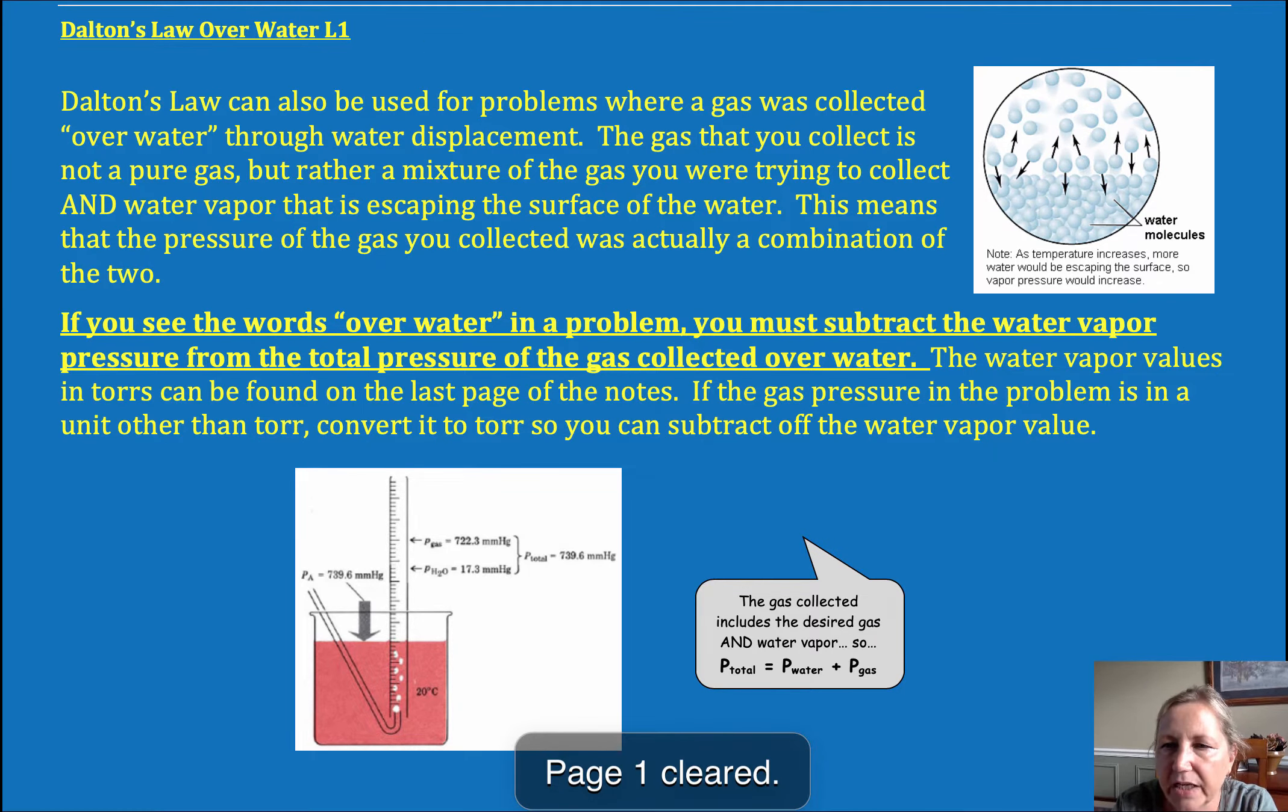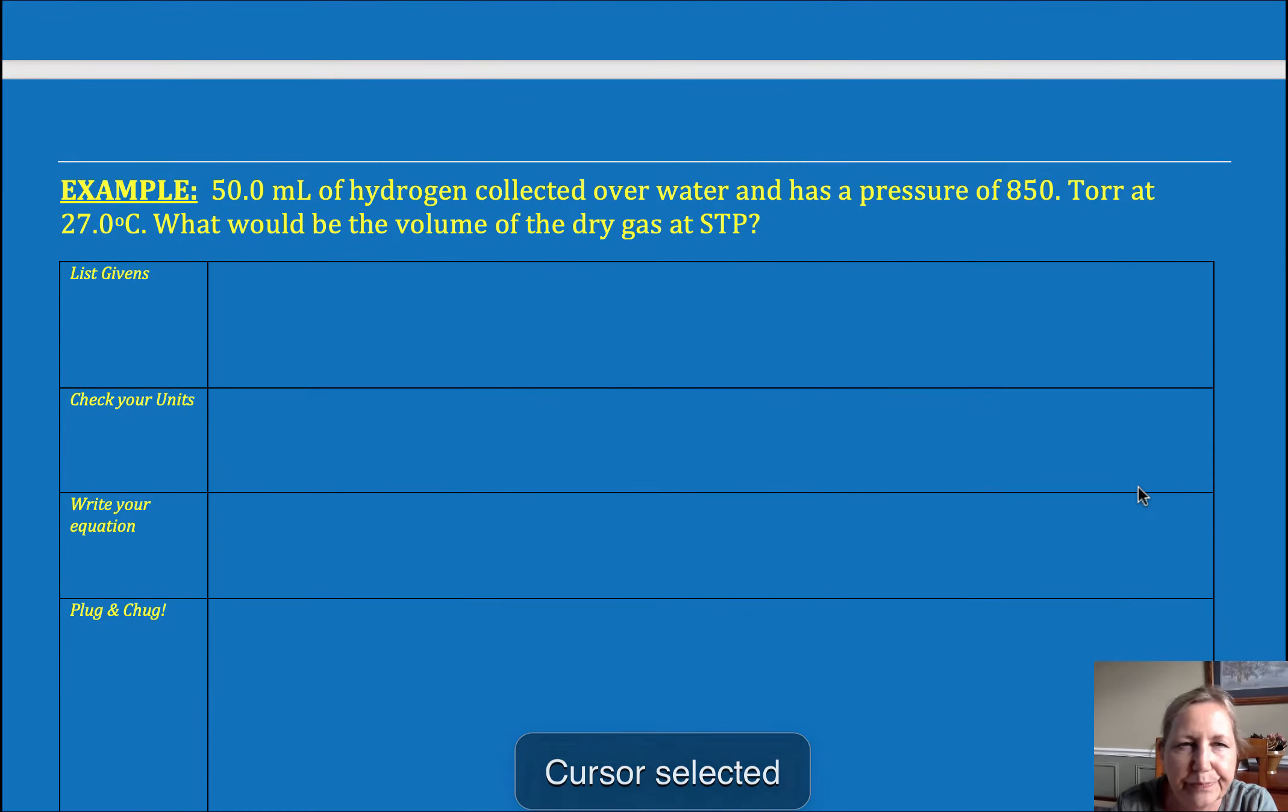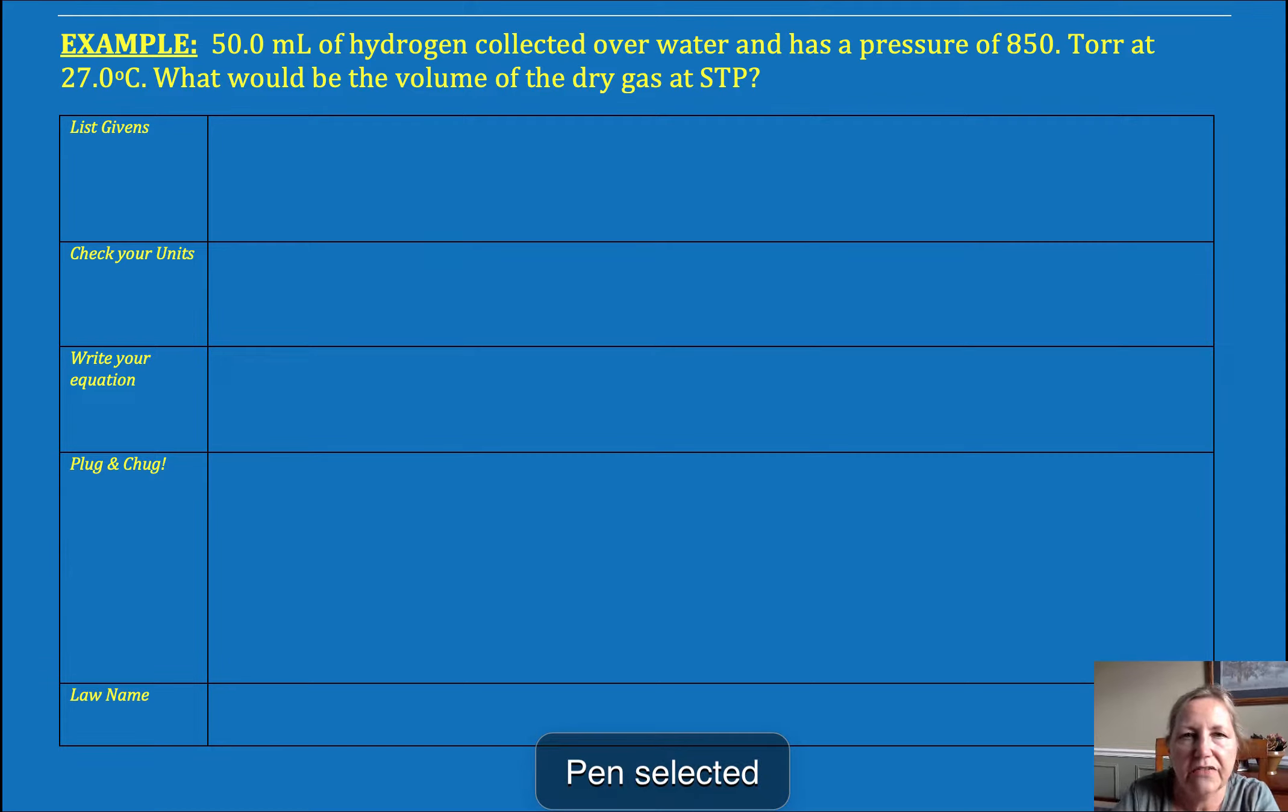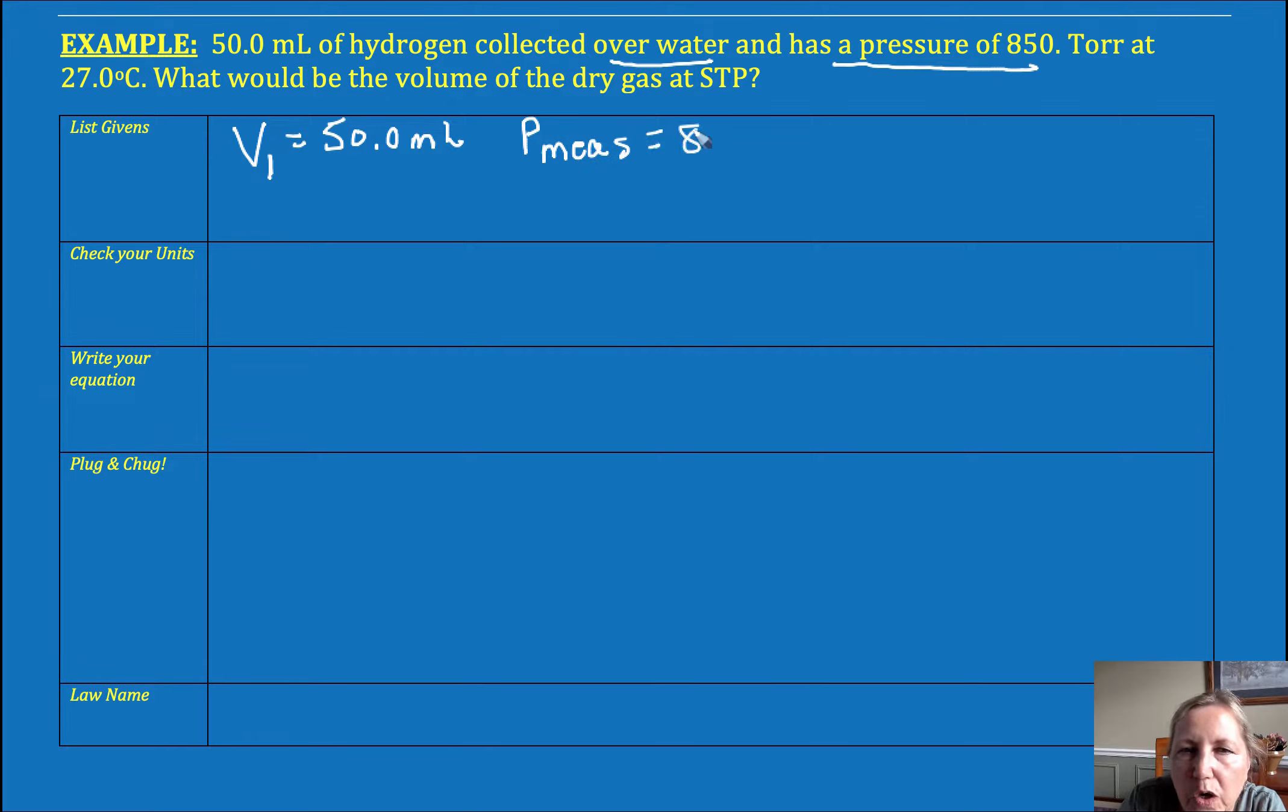So we're going to list our givens. I have a volume equal to 50.0 milliliters. It's collected over water and has a measured pressure. So that's my initial volume. My measured pressure is 850 torr. At a temperature, you can take the temperature of the water or the atmosphere because the gas will reach thermal equilibrium. So my temperature is 27 degrees Celsius.